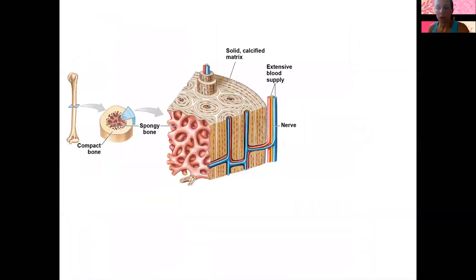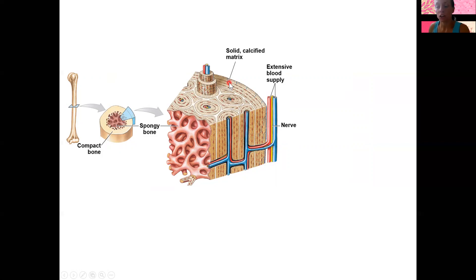Last, we've got bone. Bone has a small amount of ground substance, kind of like fibrocartilage. The matrix is mostly collagen fibers as well as calcium carbonate and calcium phosphate. The matrix is solid and calcified, and importantly, bone has a blood supply — cartilage and epithelial tissue do not have a blood supply; they're avascular. Bone actually heals fairly well because it does have that blood supply.